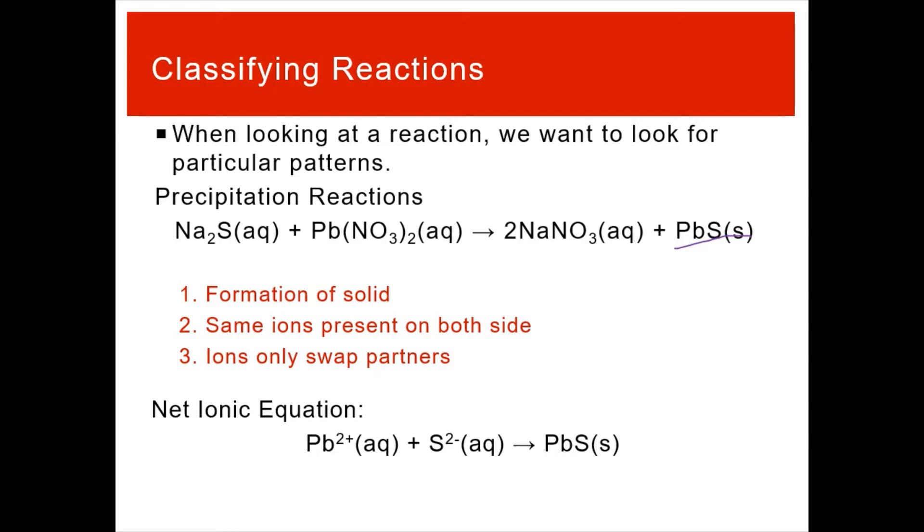When we're looking at the net ionic equation, our characteristic that we'd be expecting is cation plus anion makes a solid. You can get some variations, but generally it's going to be cation plus anion makes a solid. That is the basis of precipitation.